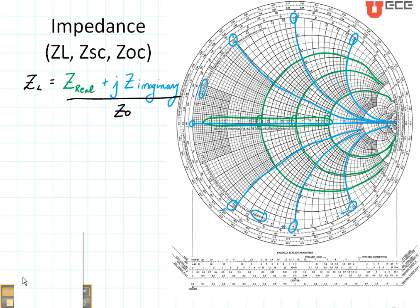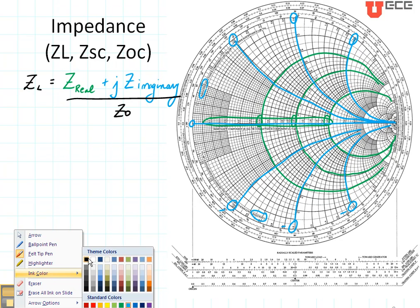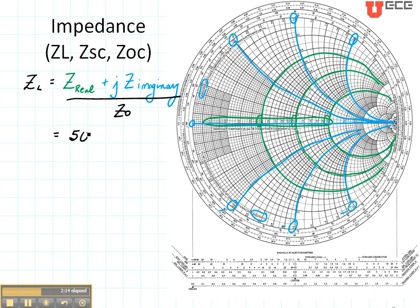Let's suppose I have a load impedance that is 50 plus j50 ohms, and my characteristic impedance is 50 ohms. When I normalize it I want to plot 1 plus j1. Let's first go find the real part of 1 - that's this circle right here. And the imaginary part of positive 1, that's this circle right here. At the intersection of these two circles right here, this is Z load equals 1 plus j1.